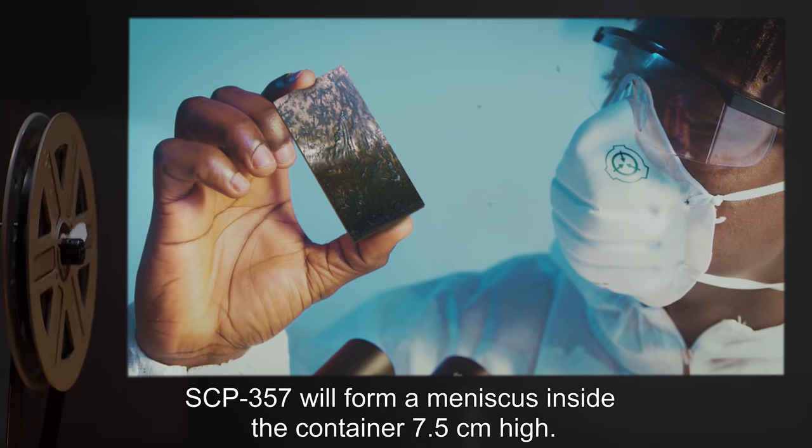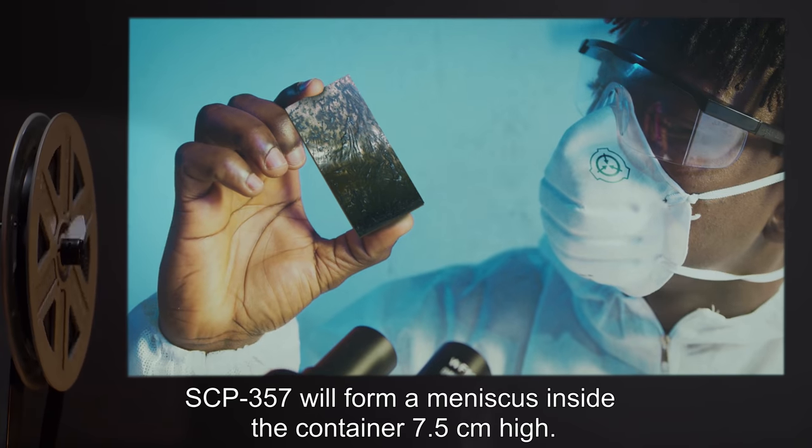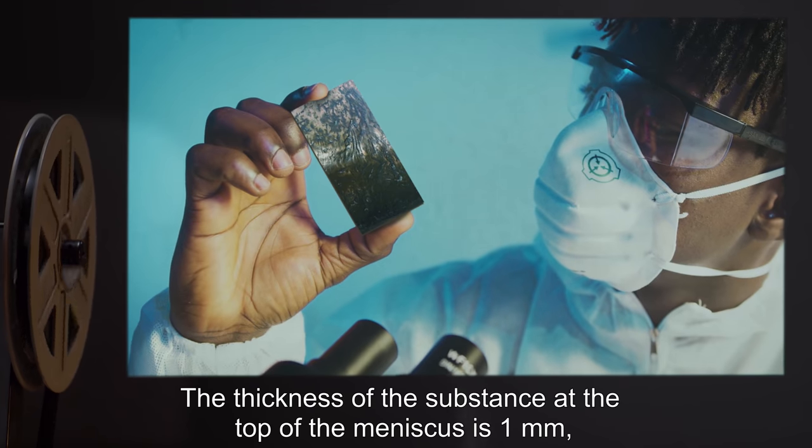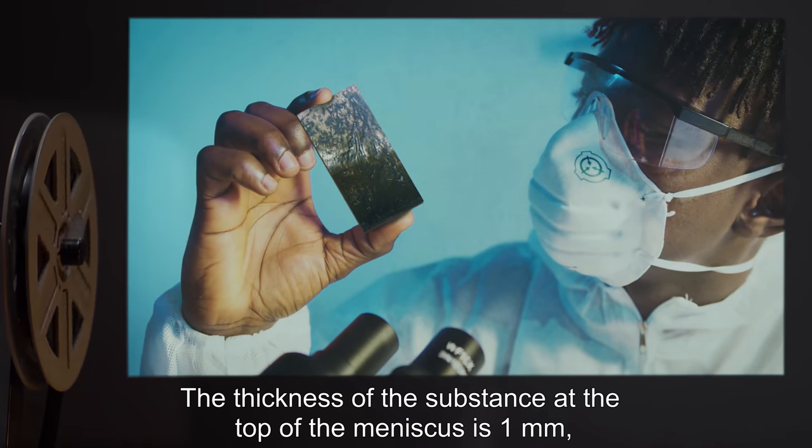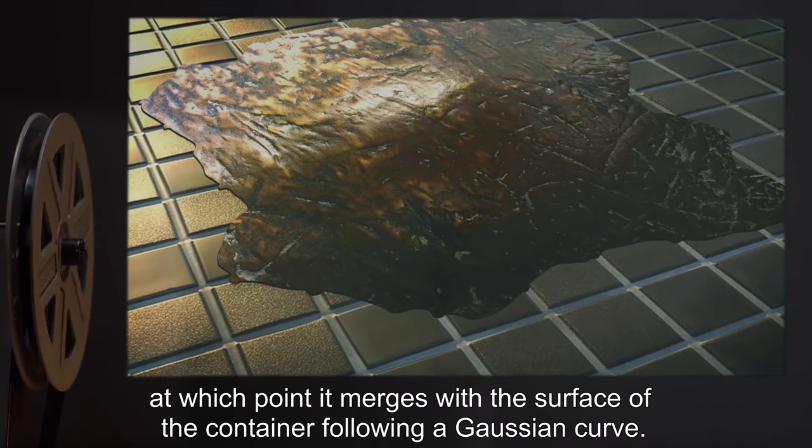SCP-357 will form a meniscus inside the container 7.5 centimeters high. The thickness of the substance at the top of the meniscus is 1 millimeter, at which point it merges with the surface of the container following a Gaussian curve.